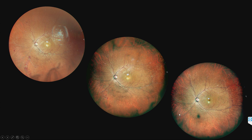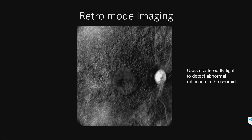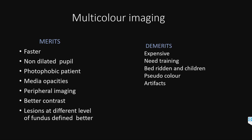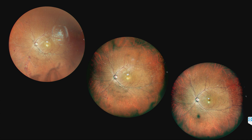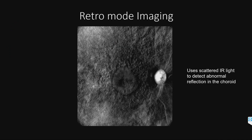Retro mode imaging is a new kid on the block and we are still exploring its possibilities. It uses scattered infrared light to detect abnormal reflections in the choroid, and a three-dimensional image is created. This is a retro mode imaging of a RAP patient with CNVM.